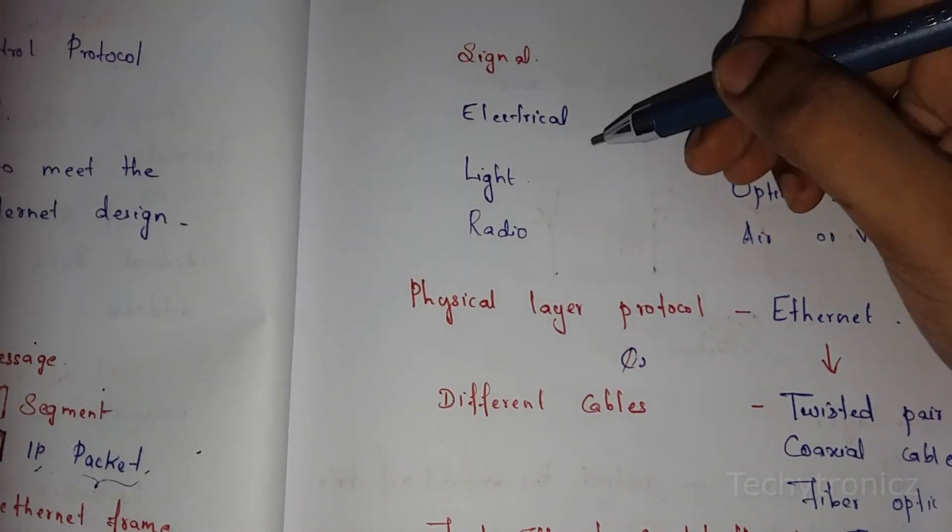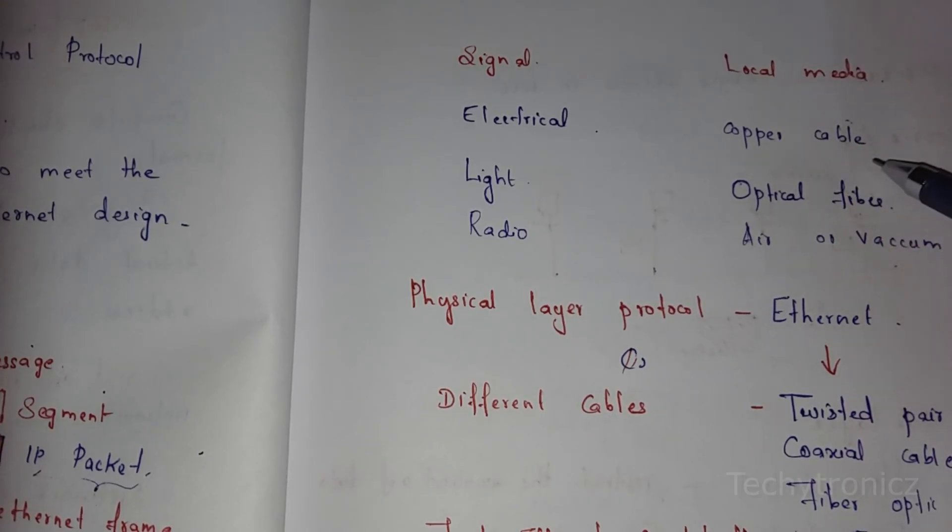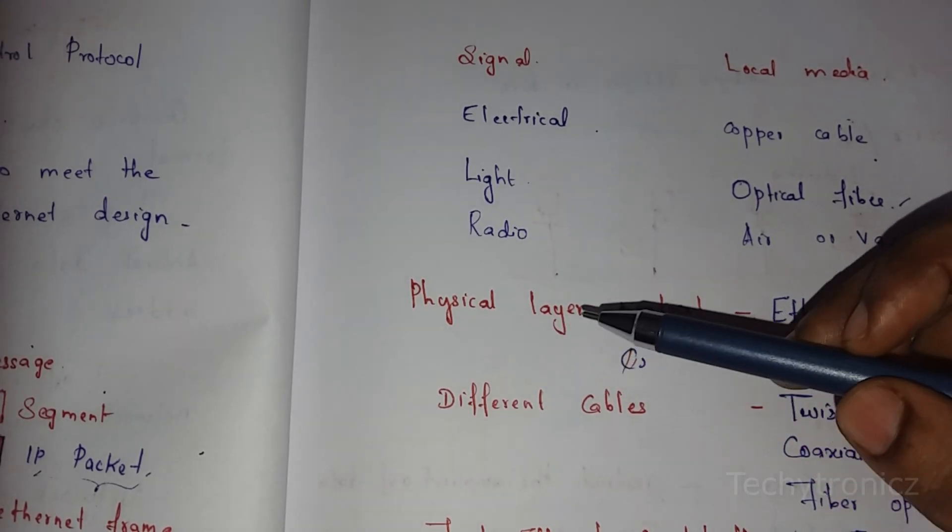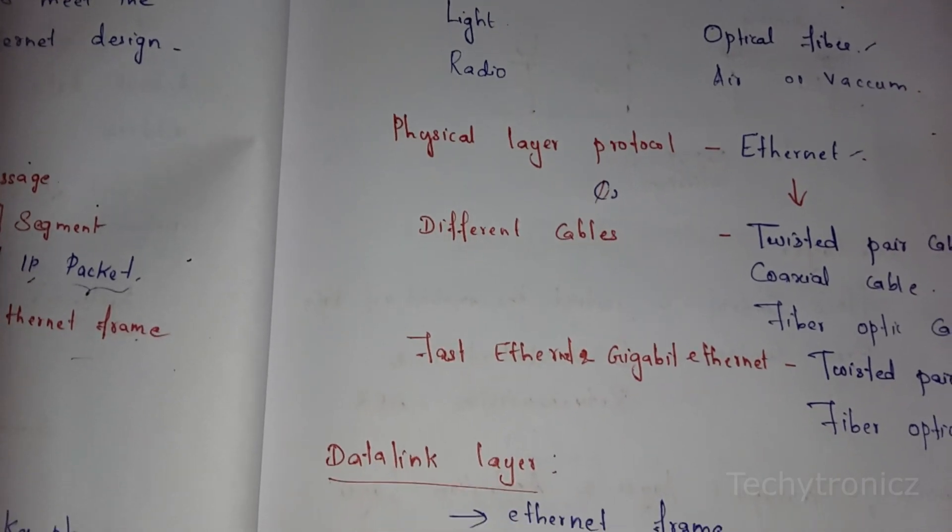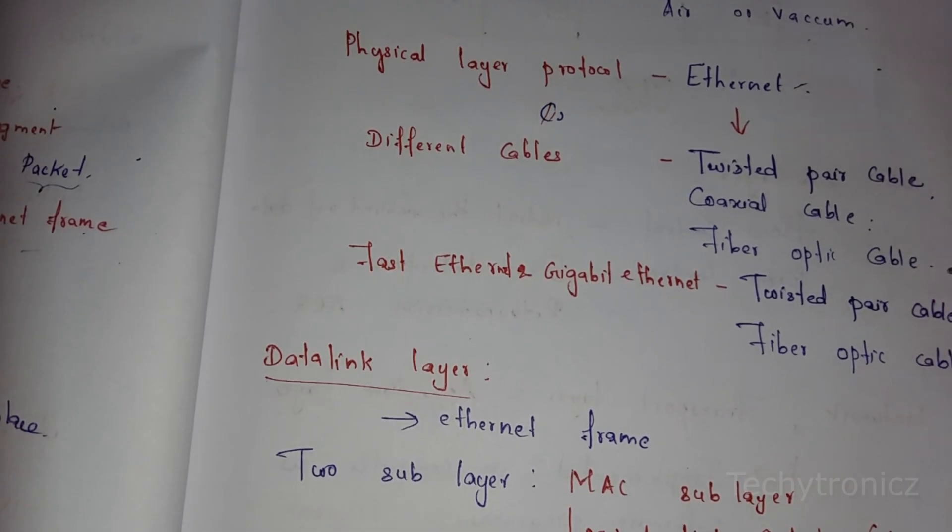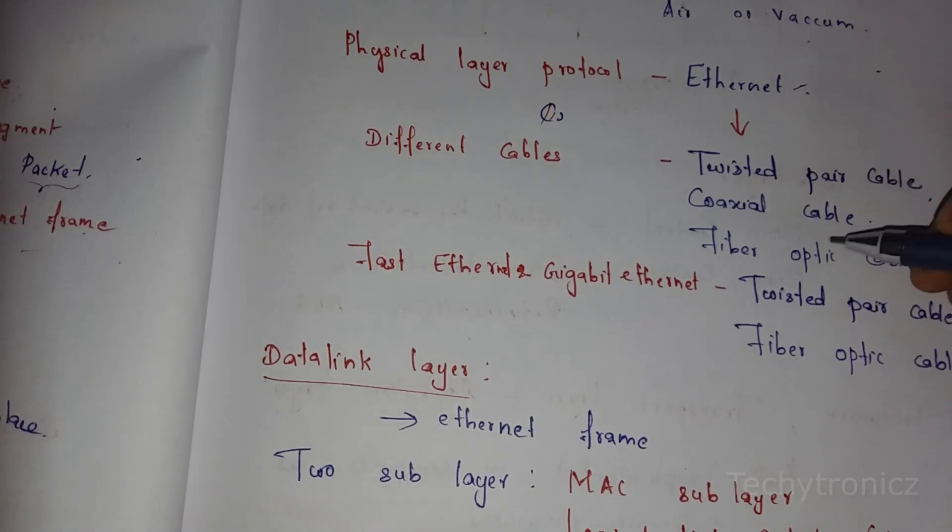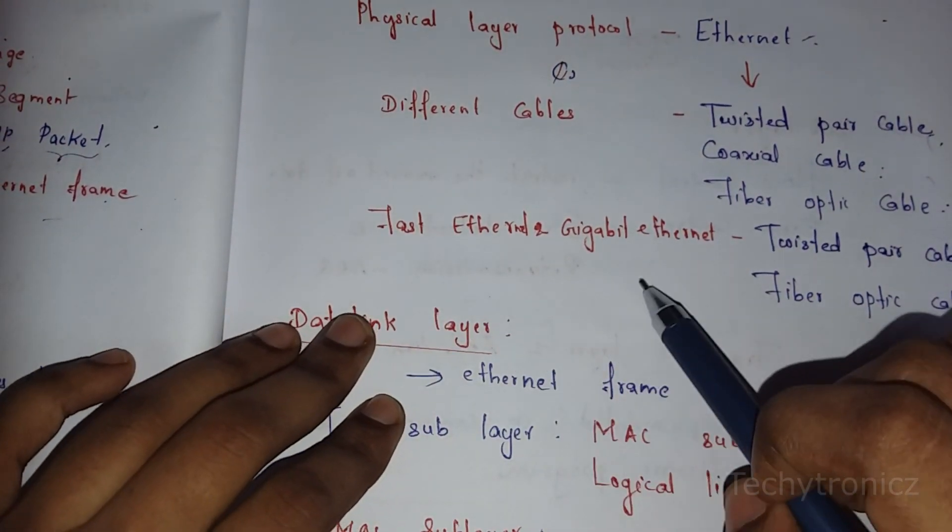The Physical Layer uses electrical signals transmitted through copper cable, light signals through optical fiber, or radio signals through air or vacuum. The main protocols used in the Physical Layer include Ethernet with different cables: twisted pair cable, coaxial cable, and fiber optic cable. For example, Fast Ethernet and Gigabit Ethernet use twisted pair cable and fiber optic cable.